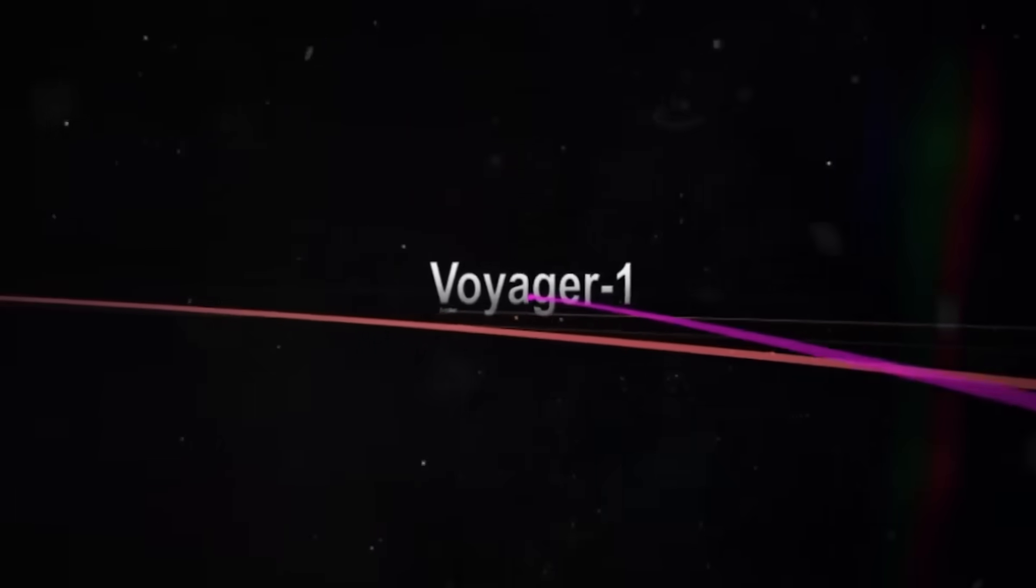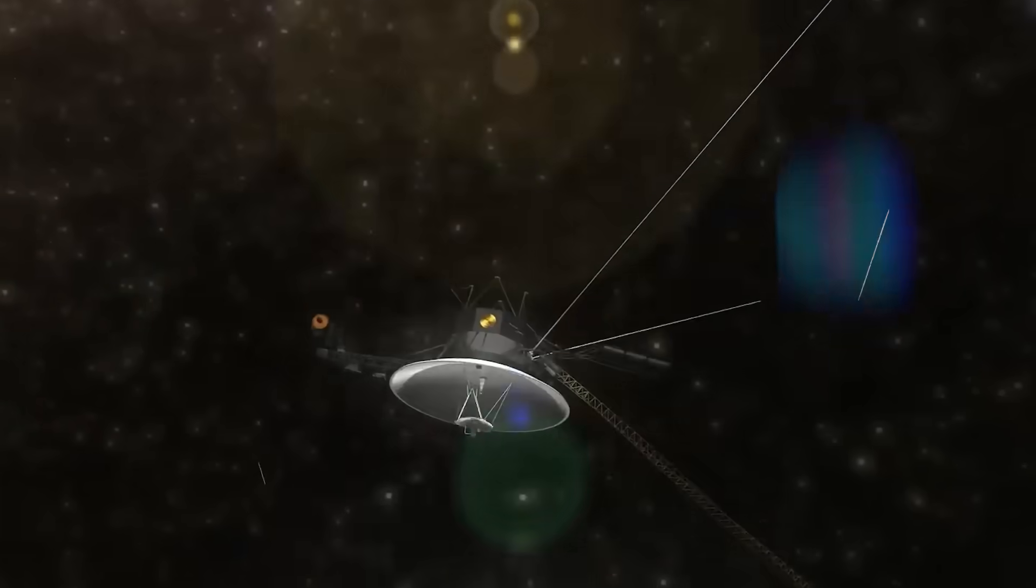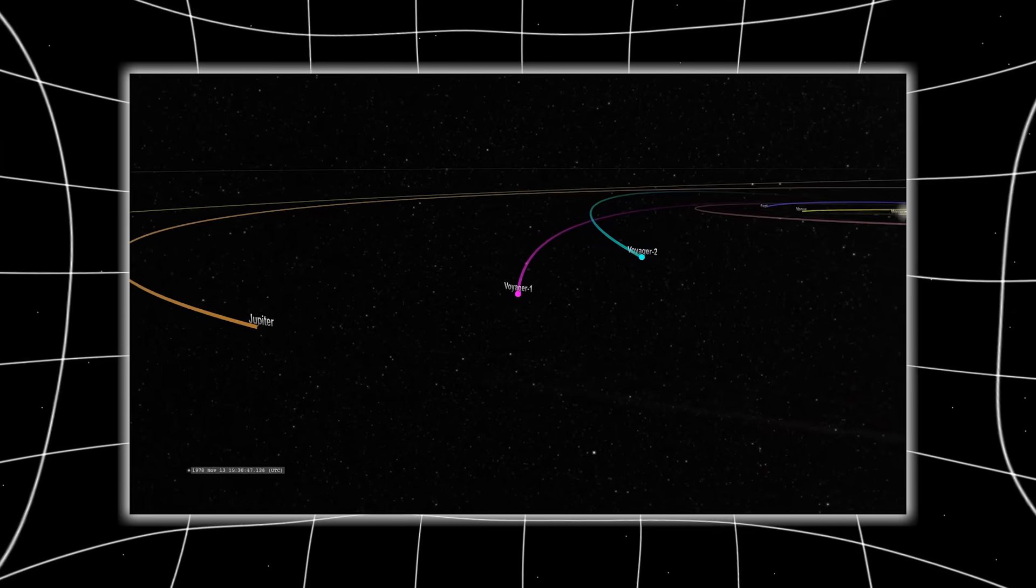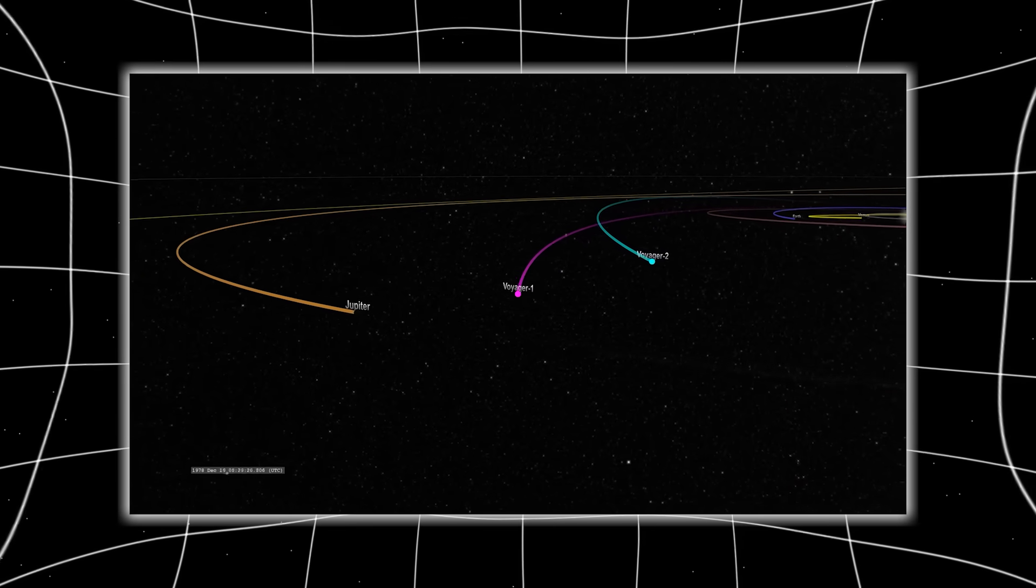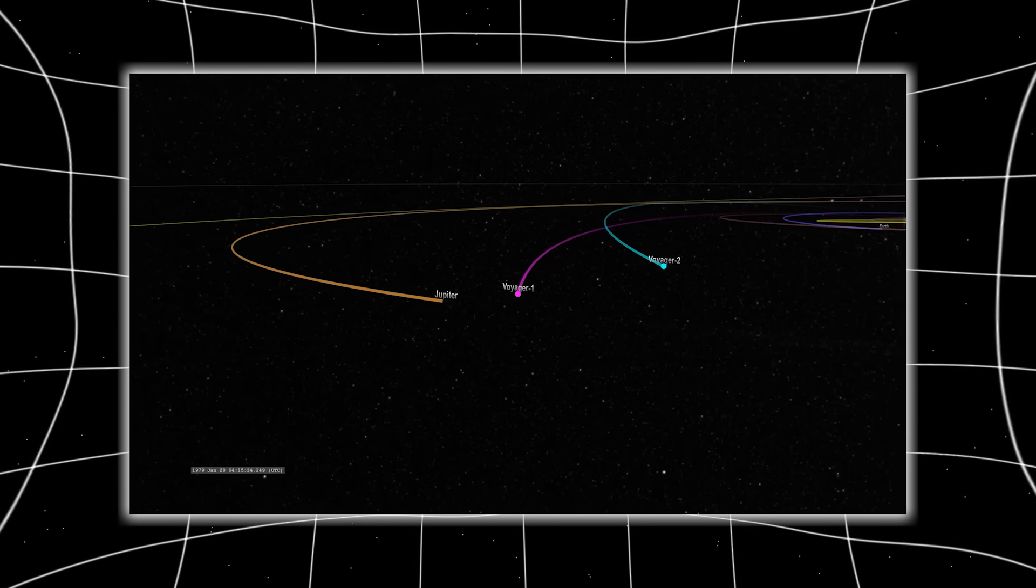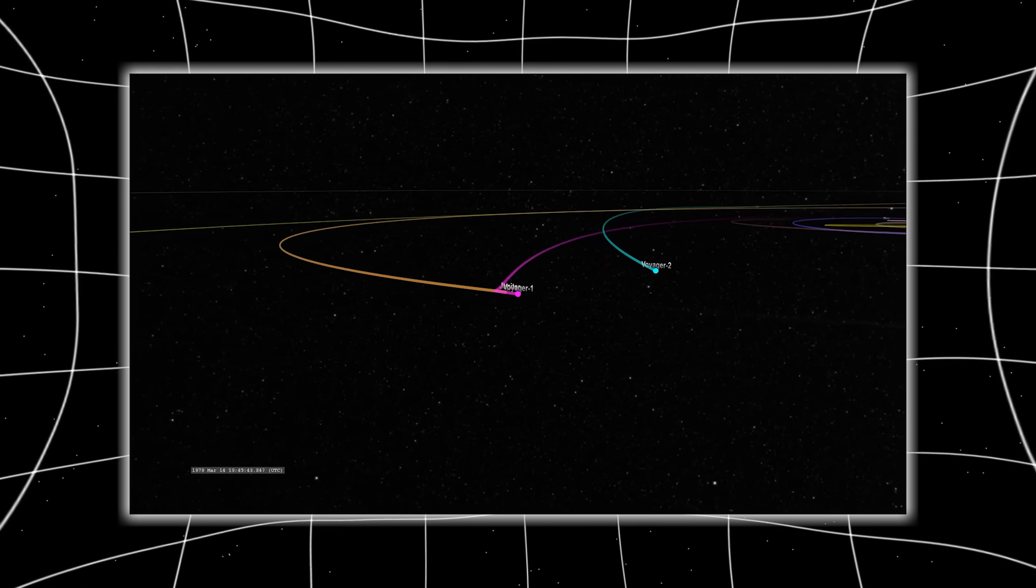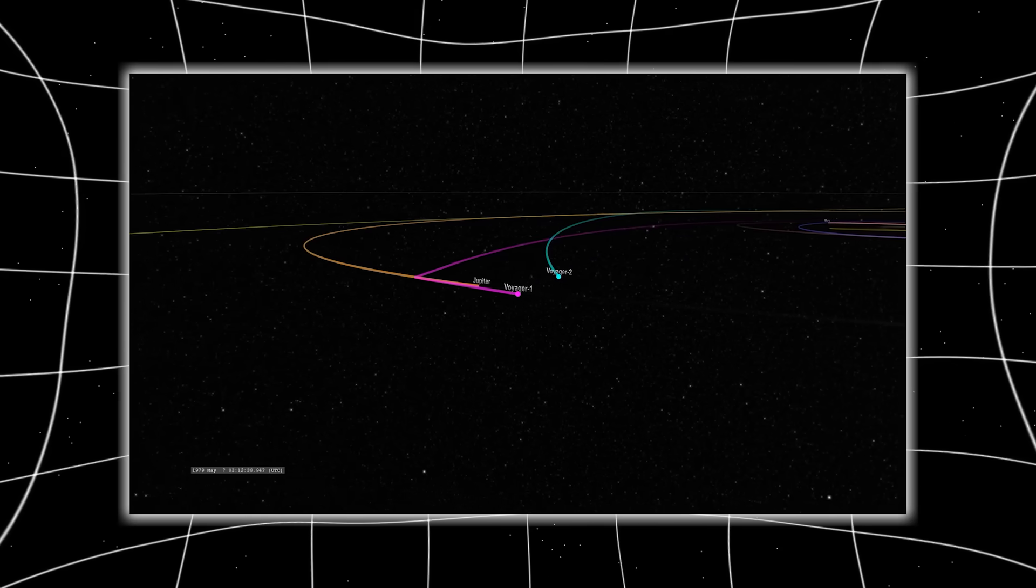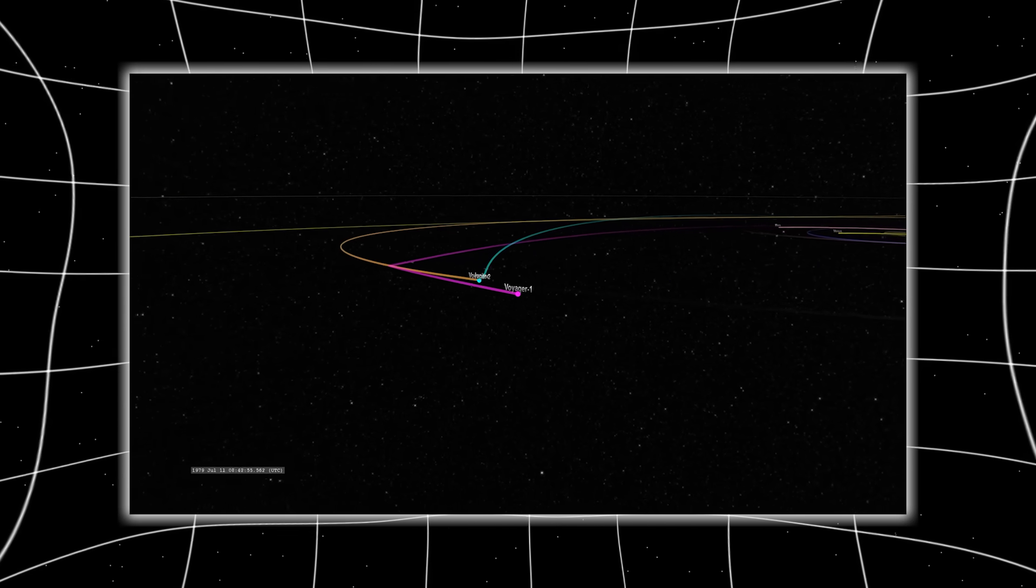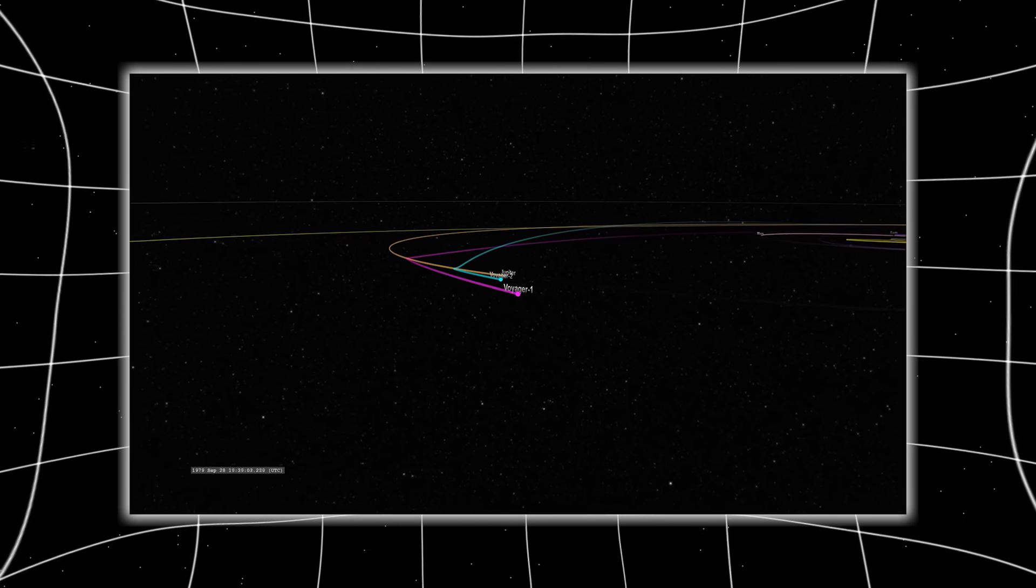Then came the final shock. Voyager 1 shifted course. Not a drift. Not an anomaly. A controlled, deliberate arc. A turn. Not back to Earth. Not toward a star. But into a region with no known mass. No gravitational pull. No celestial body to explain the change. Engineers confirmed it. Voyager 1 had executed a maneuver it wasn't programmed to perform. With no active propulsion. No command sent.